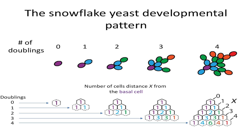We can answer this question and it has to do with the peculiar geometry of snowflake yeast. Starting from a single cell at time zero, if we allow that cell to divide and divide again and again — this is actually drawn true to form, the way snowflake yeast grow — we get a binomial expansion in cell number that is spatially localized such that the distribution of cells in the cluster should be predicted by Pascal's triangle. The basal cell in purple has one at every time point, four offspring in blue, six grandchildren, four great-grandchildren, and one great-great-grandchild.